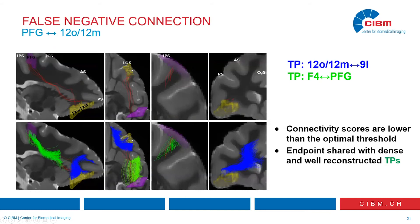Another type of error we noticed is the false negative. False negatives are especially hard to visualize. In this figure, red streamlines form a false negative connection — not identified as connected because the threshold was higher than this small number of streamlines, so too few streamlines to be identified as a true positive. We can find true positive fascicles in green and blue that overlap for most of the trajectory of those red streamlines. If tractography starts in voxels covered by the dense green and blue fascicles, it will follow the dominant direction and may miss the direction needed to complete this long trajectory.